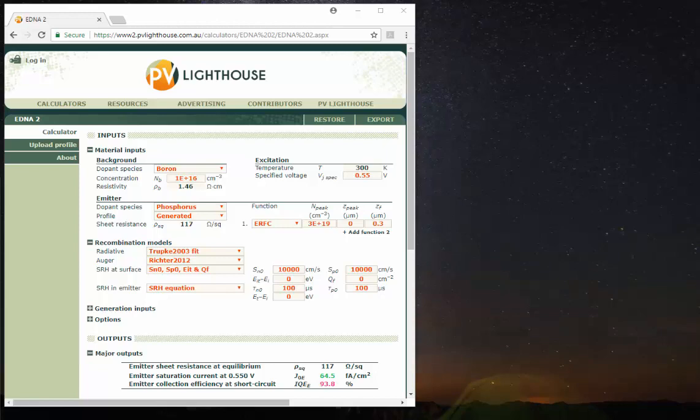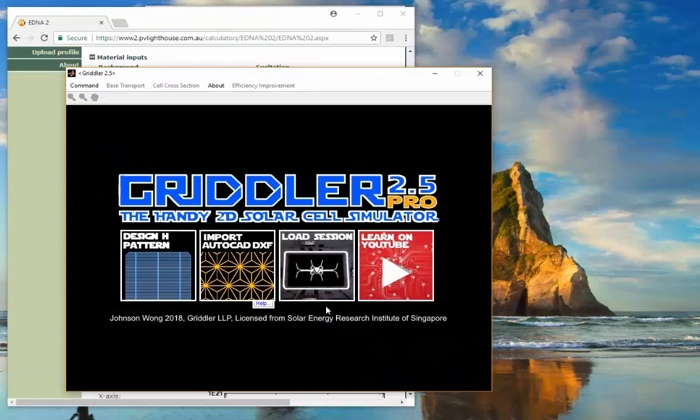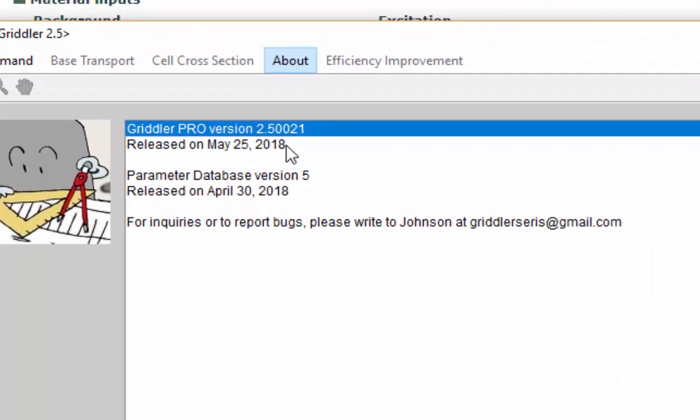Whereas to access PC1D, I will show you today how to do it from the Gridler 2.5 Pro interface. So we're going to launch Gridler. Here, we're using the version 2.50021, released on May 25th, 2018.